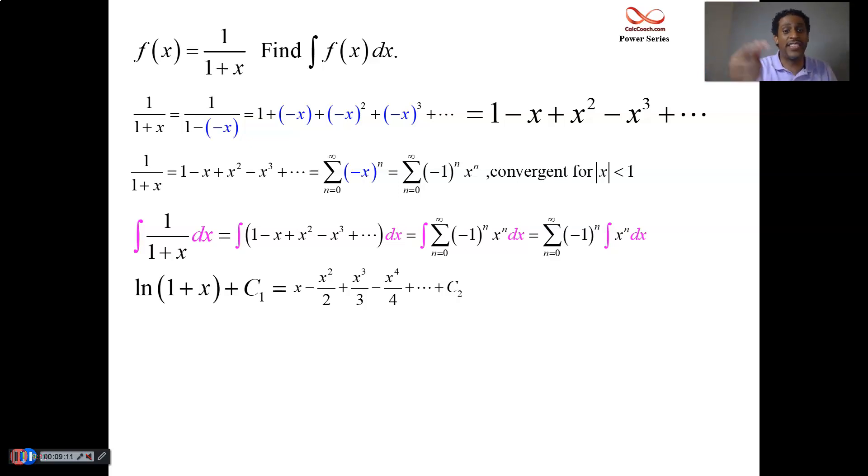And that, written in summation form, is for you to take x to the n plus 1, divide by n plus 1, still have the alternating there, plus some random constant, which could be combined with the other random constant. And we have ourselves the summation.